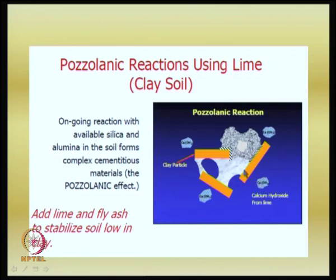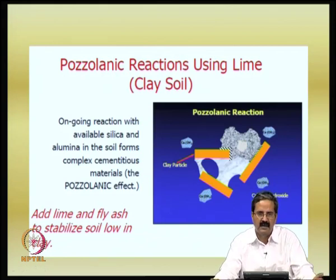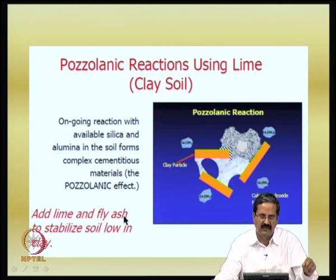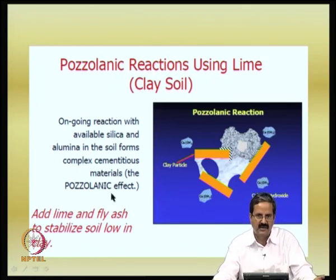Calcium hydroxide formation through ongoing reaction with available silica and alumina in the soil forms complex cementitious materials. In the clay, we can add lime and fly ash, or cement — depending on requirements, if you want improvement in properties. Fly ash is somewhat pozzolanic; some fly ashes form cementitious compounds and can also be added. These are all quite important factors influencing the lime treated clay.